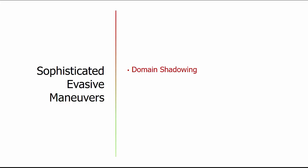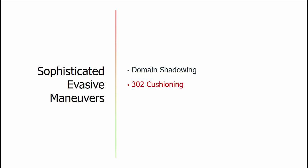As time has gone on, exploit kits have had to adopt more evasive maneuvers. These include domain shadowing — compromised domains used as jumping points to finally get to landing pages — and 302 cushioning. A 302 is a redirect, and many network traffic analyzers don't pay attention to 302s, so traffic being redirected to gates and landing pages can get lost in the noise. Another evasive maneuver is a custom encryption payload — an abuse of Diffie-Hellman public key encryption to encrypt the traffic between the dropped malware payload and communication back to the command and control.